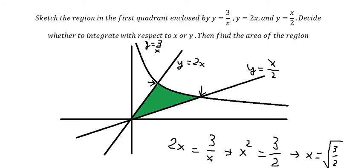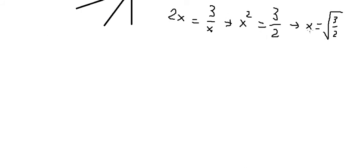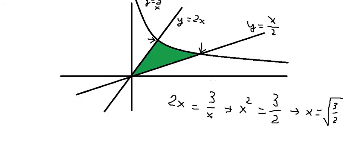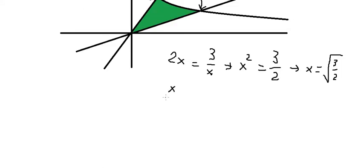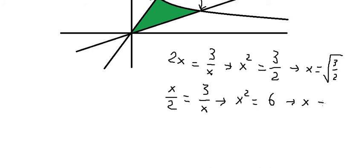According to the graph, the intersection is on the positive side, and since the question mentions the first quadrant, we choose the positive number. Similarly for the second intersection, we get x squared equals 6, so x equals the square root of 6.